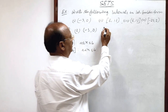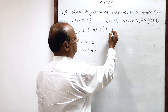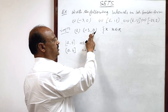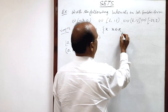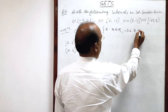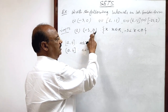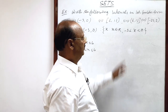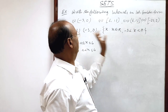So in set builder form, we will write: this is a set having elements x such that x belongs to the set of real numbers, because minus 3, 0, and all values between minus 3 and 0 are real numbers. Take care — we are not using the sign of equality because this interval is open on both sides.